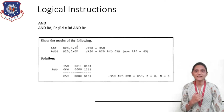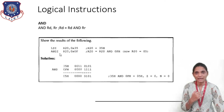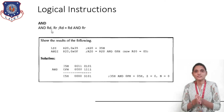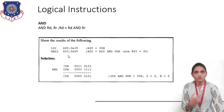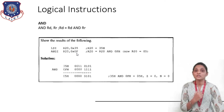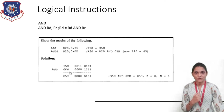For example, LDI R20, 35 loads register R20 with the value 35. Then we can use the ANDI instruction — similar to AND but one data can be provided as immediate data. So the instruction ANDI R20, 0x0F performs the AND operation of the content of R20 and 0F, and the result is stored inside register R20.